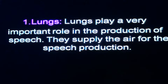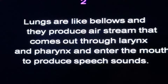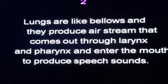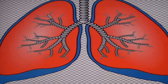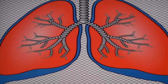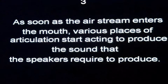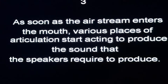Lungs are the most important organ. They play a very important role in the production of speech sounds — they supply the air for speech production. Lungs are like bellows and they produce an air stream that comes out through the larynx and pharynx and enters the mouth to produce speech sounds. As soon as the air stream enters the mouth, various places of articulation start acting to produce the sounds that speakers require.